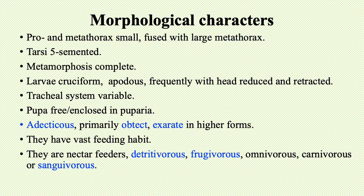The pupa is adectious and exarate in form. Dipterans have vast feeding habits — they are nectar feeders, detritivorous (feeding on detritus), frugivorous (feeding on fruits), omnivorous, carnivorous, or sanguivorous. Sanguivorous means blood-sucking or feeding on blood.